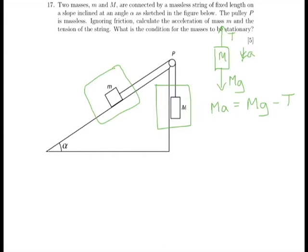So if there was no acceleration at all, then Mg in this instance would equal T. OK, so let's call that equation 1. We will be coming back to that a few times.